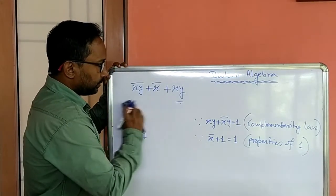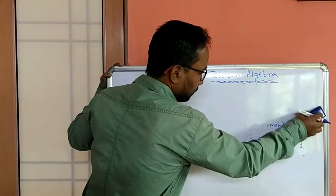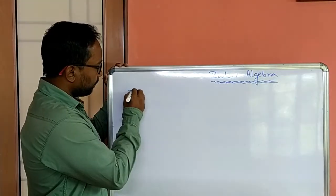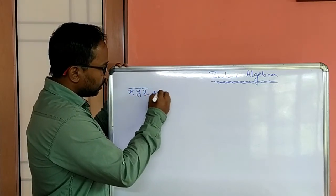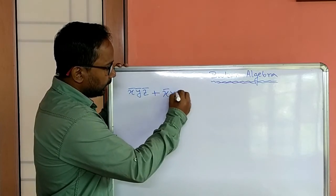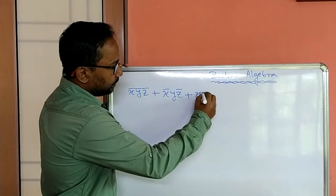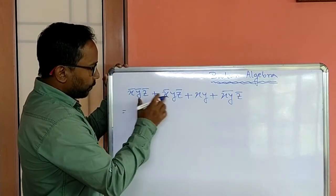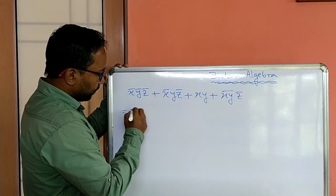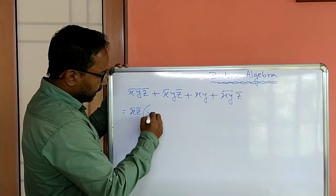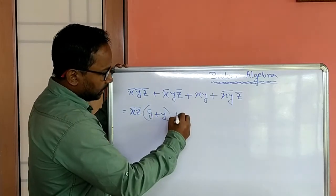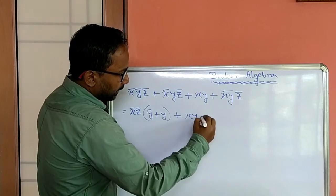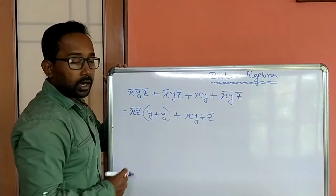Now next another example. We have to simplify xy plus y not plus y not. From these two product terms we have to take x not, z not common. So x not, z not, and here we are getting y not plus y. Then from here xy plus xy not, z not we are getting xy plus z not. This is the third distributive law.